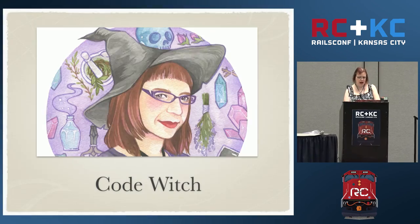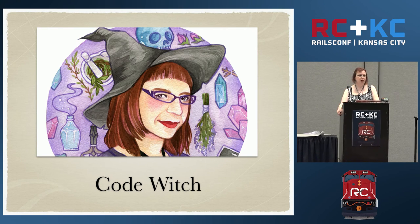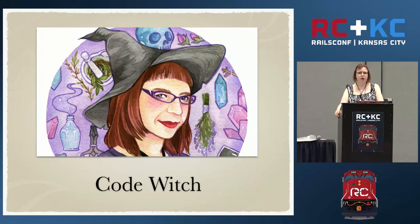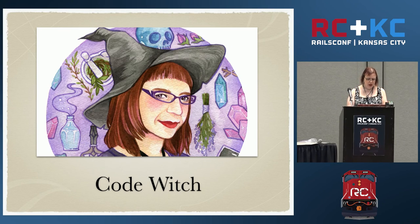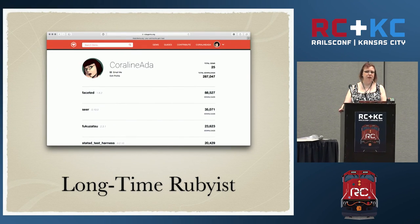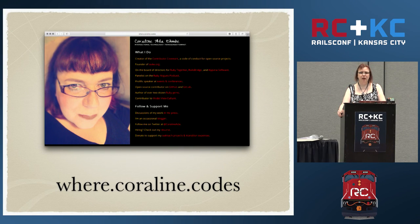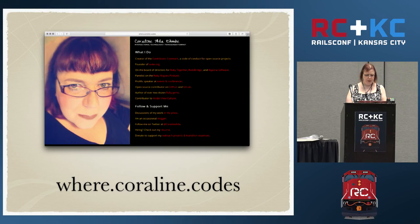Who am I? I've been doing web development since 1993, so pretty much forever. I built my first website before there was a graphical web browser. I've been doing Ruby since 2007, and I have about 2,000 Ruby commits to my name. I have the most awesome vanity URL ever — I'm Coraline.codes. You can go there to find out where I'm speaking and read my occasional blog posts.